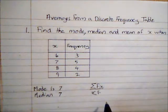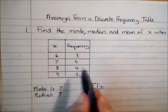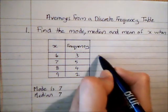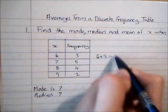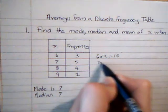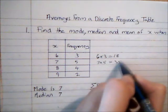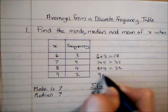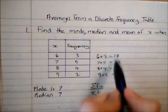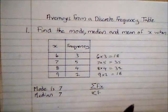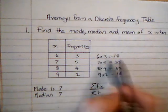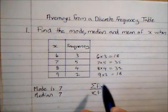This is a quick way of doing it rather than adding these 14 bits of data together. If I do six times three which is 18, seven times five which is 35, eight times four which is 32, and nine times two which is 18, and sum these, it's a much quicker way of summing all 14 bits of data because there's a lot of repeats.